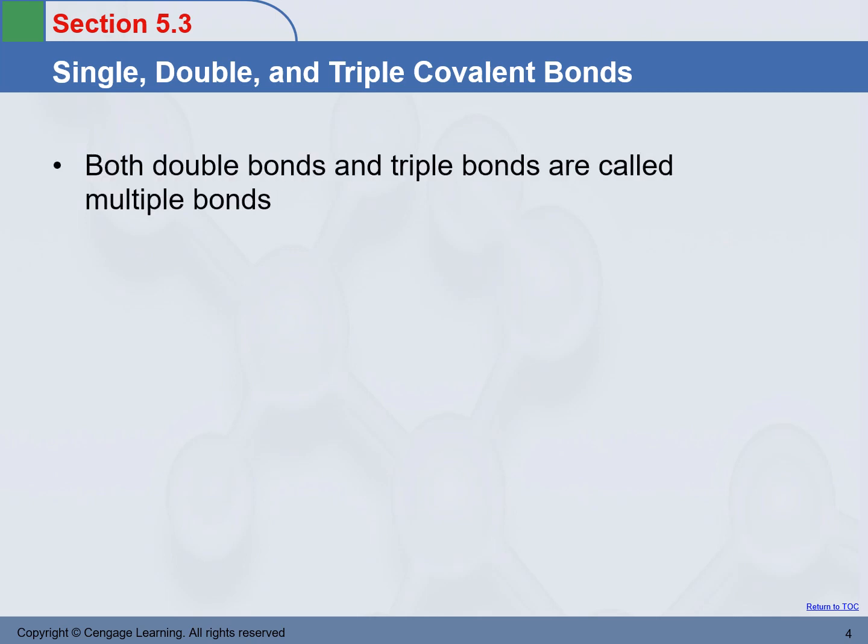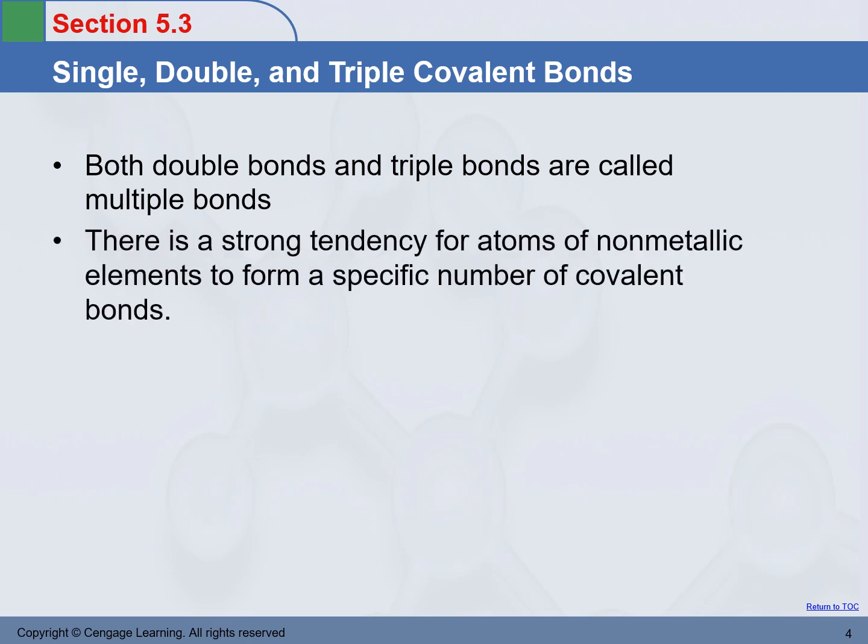Both double bonds and triple bonds are called multiple bonds. There is a strong tendency for atoms of non-metal elements to form a specific number of covalent bonds.